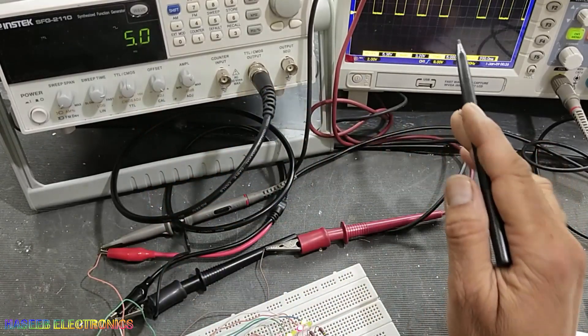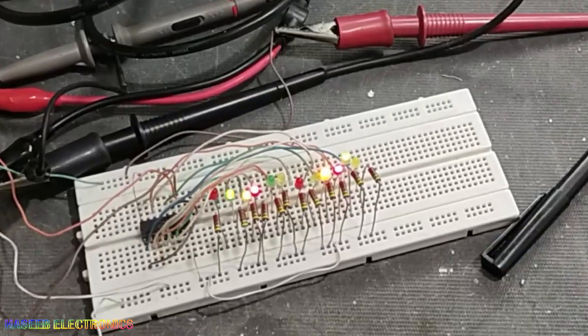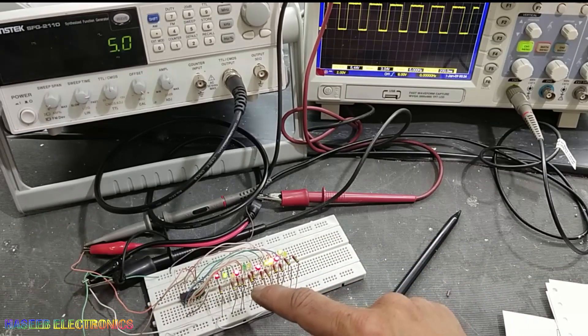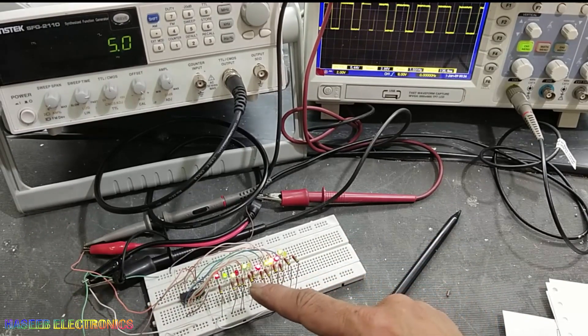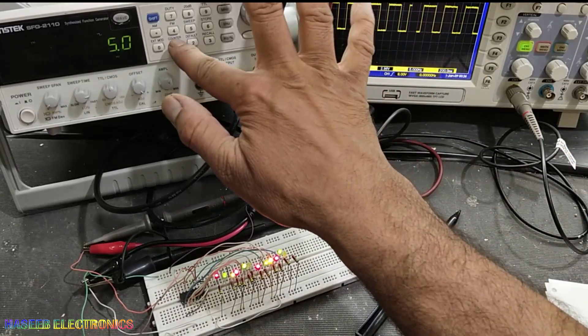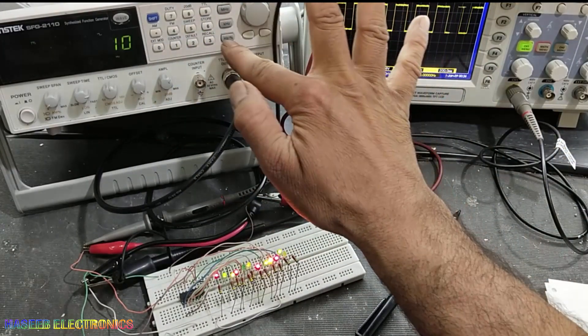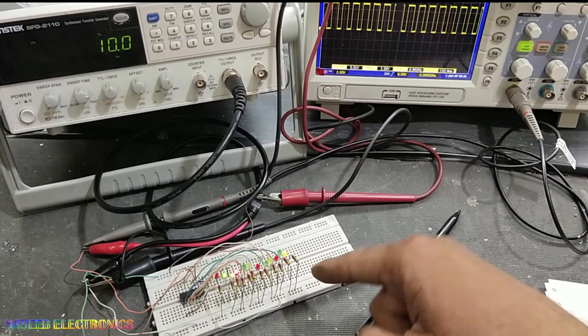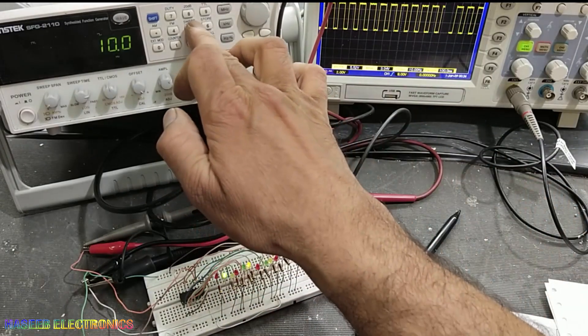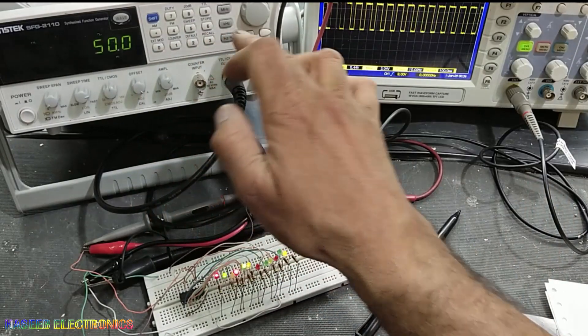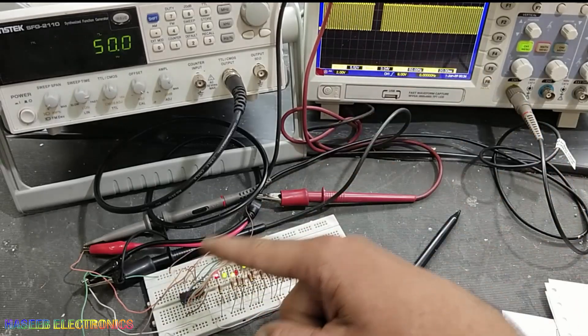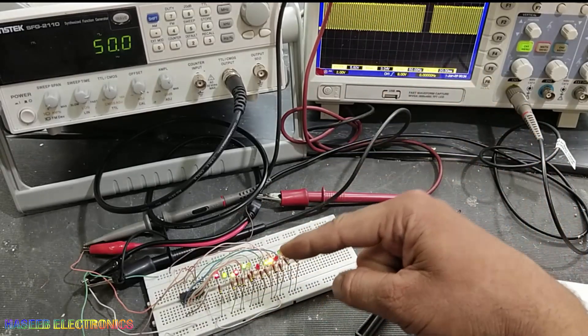This time I applied 5 hertz signal and our circuit is behaving like this. Now we can see the clock speed is less. If I put 10 hertz, it's moving faster. If I put 50 hertz, it is more speedy. These are the pulses, the input clock pulse provided on the input side.